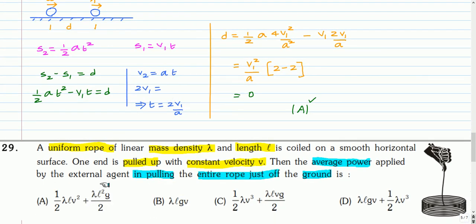This is the next question. A uniform rope of linear mass density λ and length L is coiled on a smooth horizontal surface. One end is pulled up with constant velocity V. The average power applied by the external agent to lift the entire rope just off the ground is to be found.